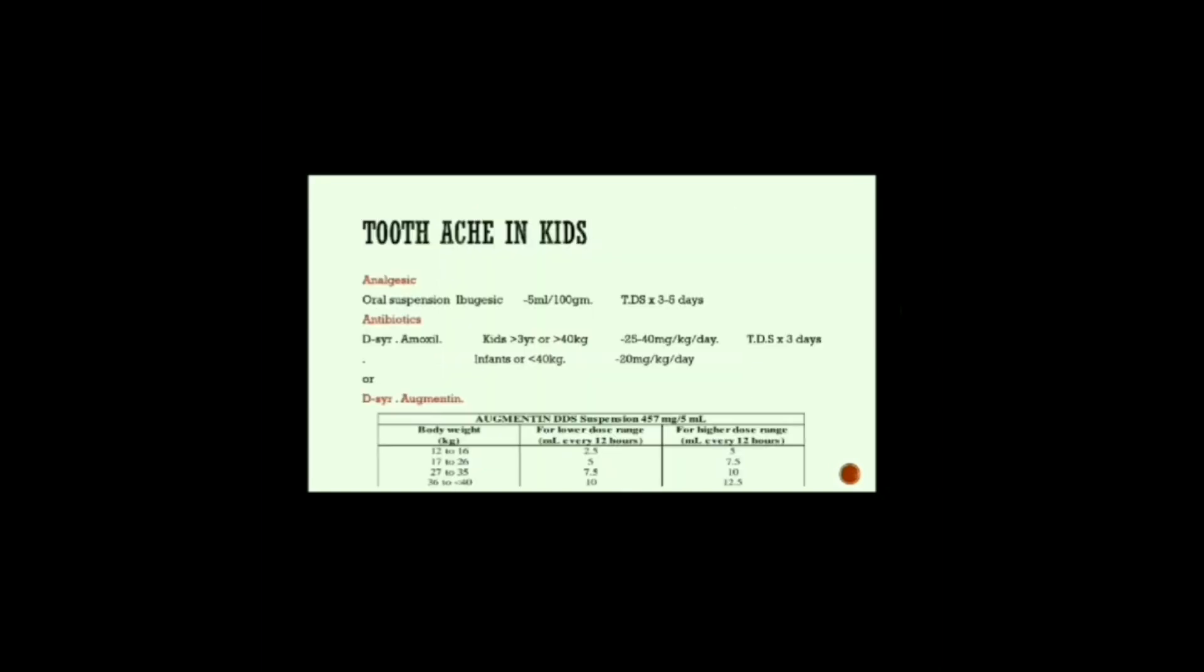The pediatric patient gets different dosing than that of an adult and depends mostly on the weight. All the drugs are mostly given in a form of syrup. For analgesics, ibuprofen is given 5 ml or 100 mg thrice a day for 3 to 5 days. Ibugesic is a combination of ibuprofen and paracetamol.